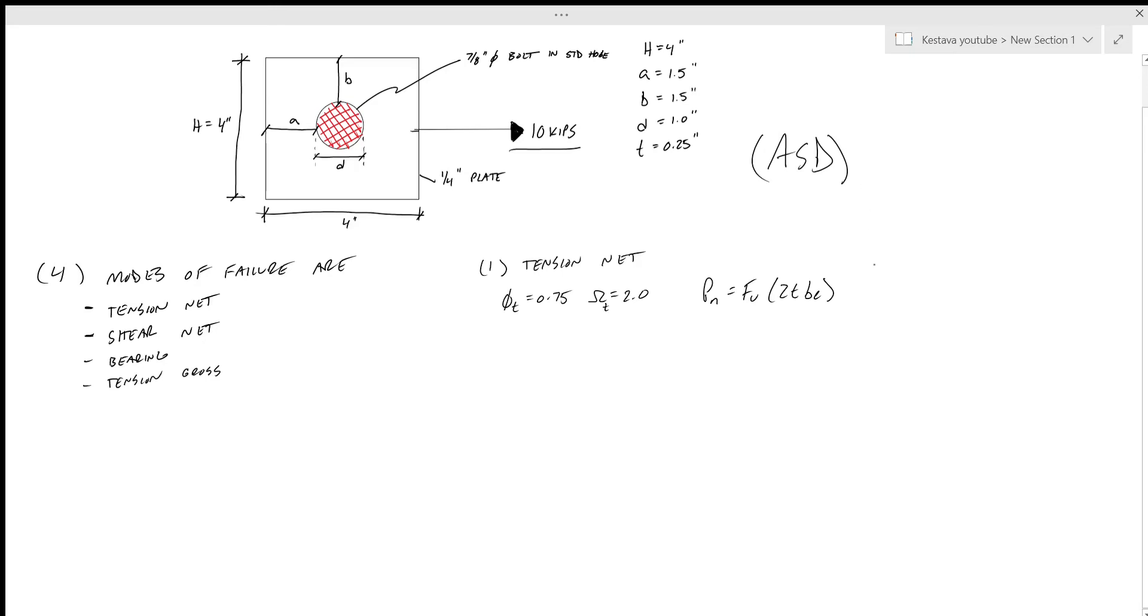Now what's happening here is your failure mode is happening along something like this and you have your 10 kips happening that way, so that's your failure plane. What we want to know is first t, which is one quarter inch. So b_e, what is b_e? It equals 2t plus 0.63, needs to be less than or equal to just b in general. So b we know, b is equal to 1.5 inches. 2t is 0.25, that's the thickness, plus 0.63 which equals 1.13, which is less than or equal 1.5.